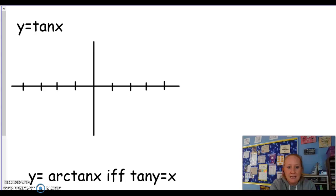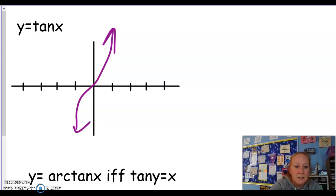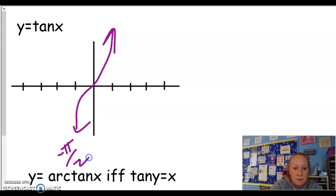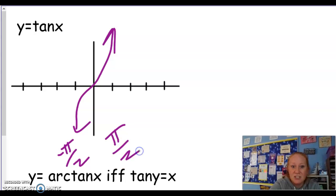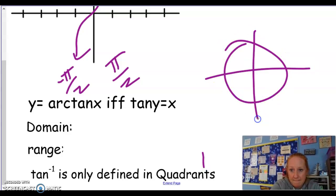Tangent, we're going to go like that, so we're only going to use -π/2 to π/2. These are only quadrants 1 and 4.